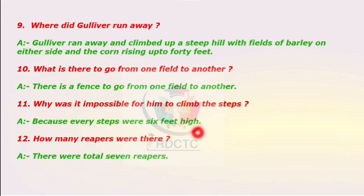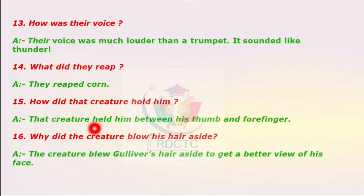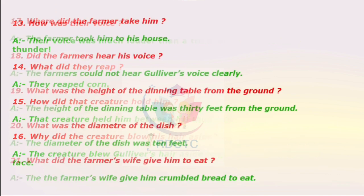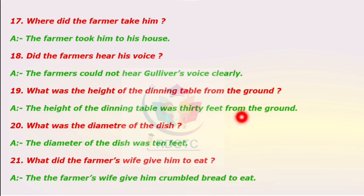How many reapers were there? There were 7 reapers in total. How was their voice? Their voice was much louder than a trumpet — it sounded like thunder. What did they rip? They ripped corn. How did the creature hold him? The creature held him between his thumb and forefinger. Why did the creature blow his hair aside? To get a better view of his face. Where did the farmer take him? The farmer took him to his house. Could the farmers hear his voice? The farmers could not hear Gulliver's voice clearly. What was the height of the dining table? The height of the dining table was 30 feet from the ground.